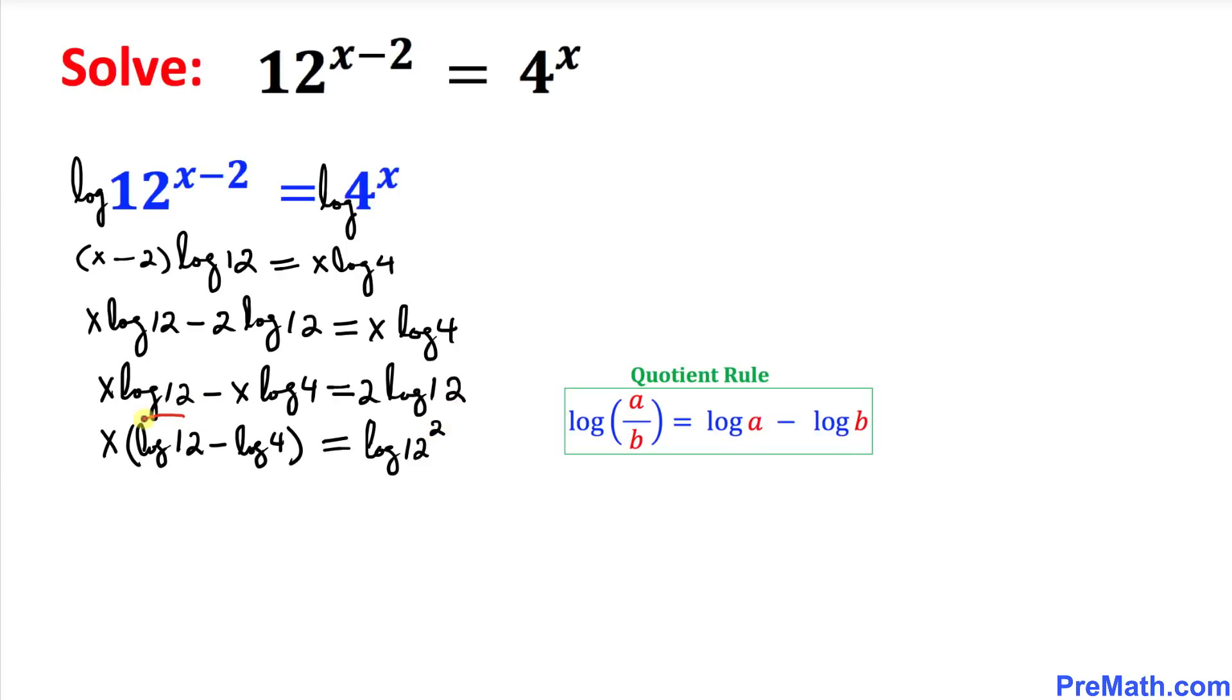Now let's focus on inside this parentheses over here. I can use this quotient rule, and this could be written as x times log of 12 divided by 4. This 12 squared is simply 144.